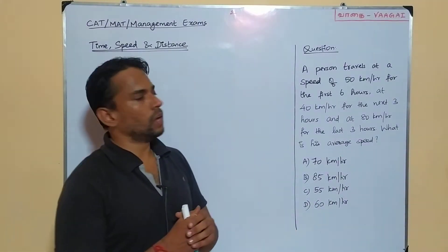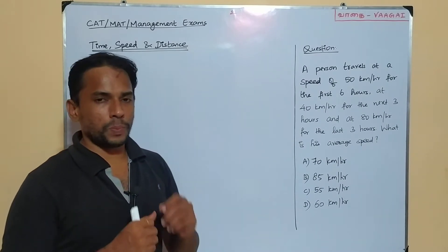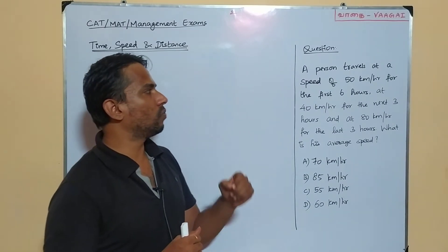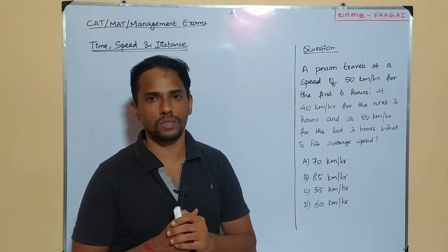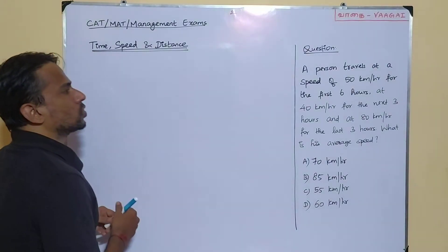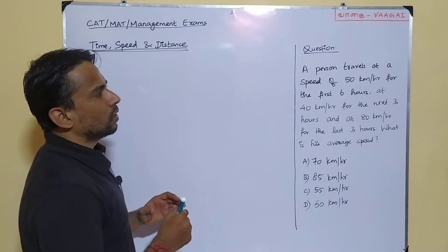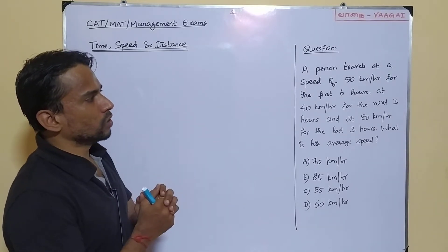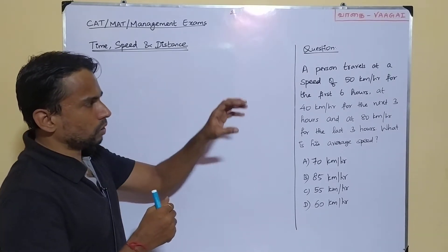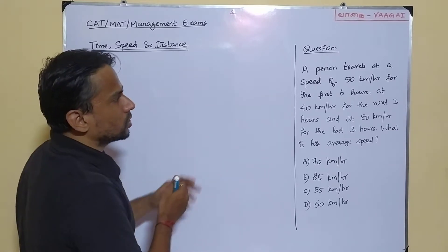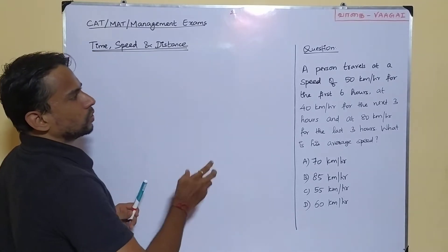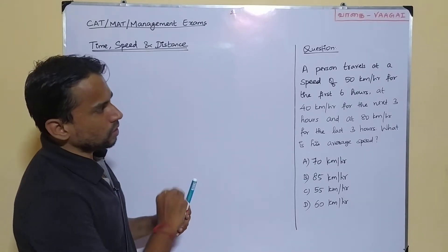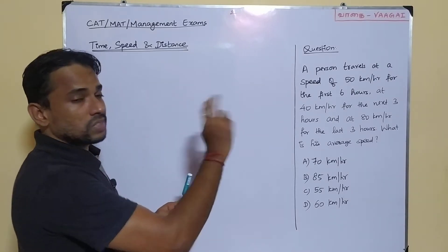Our question here is: a person travels at a speed of 50 km per hour for the first 6 hours. The person is going to travel some total distance but in parts. Those parts are given one by one.